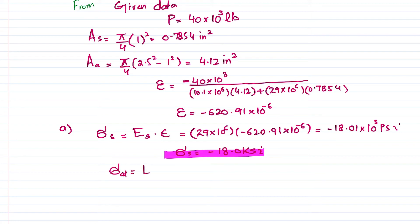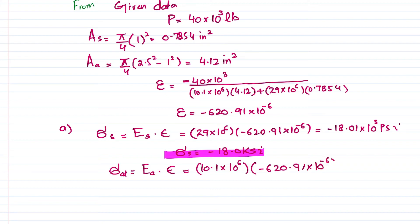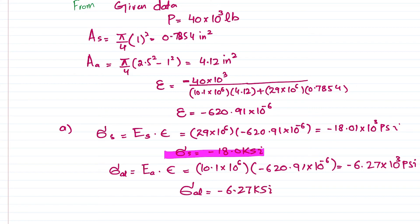Now finding the stress in the aluminum shell: σ_aluminum = Ea × ε = (10.1×10⁶) × (−620.91×10⁻⁶) = −6.27×10³ psi. Therefore, the stress in the aluminum shell is −6.27 ksi (compressive). These are the Part A answers.